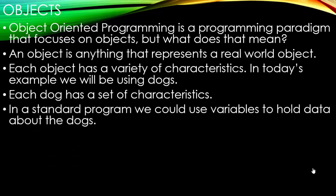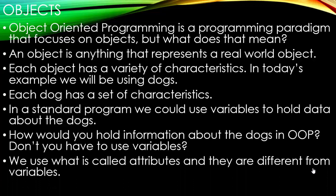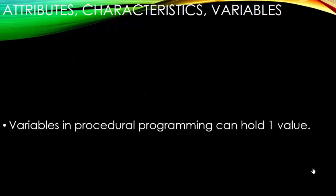Now, in a standard program, we could use variables to hold data about the dogs. Well, how would you hold information about the dogs in object-oriented programming? Don't you have to use variables? We use what is called attributes, and they are different from variables. Let's take a look at how they're different.